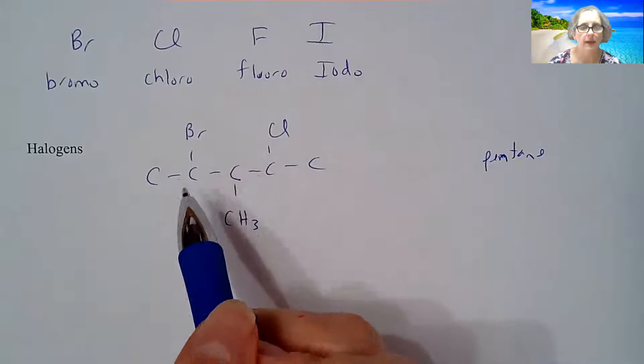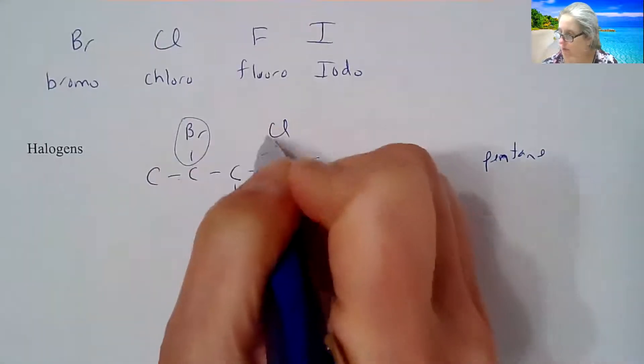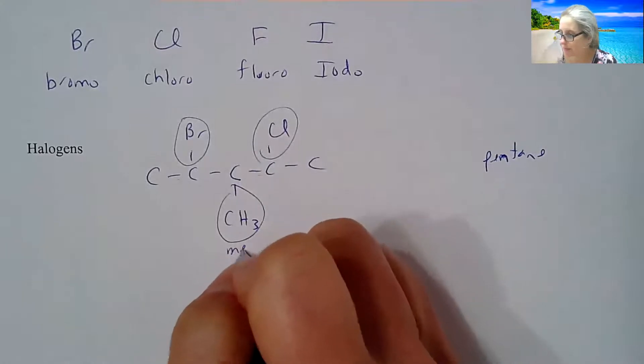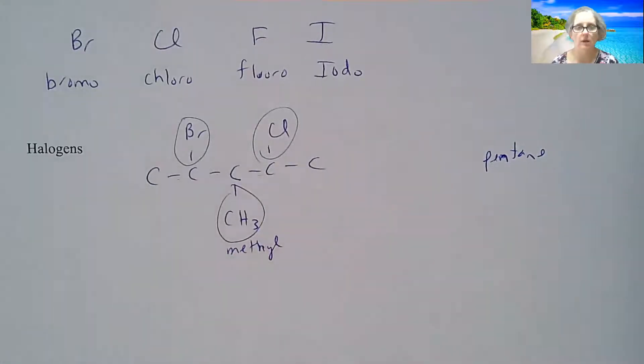Now I have bromine as a branch, chlorine as a branch, and CH3, that's a methyl group. You're going to sometimes see me write it that way. You don't have to. I'm just trying to overemphasize that that's my methyl group.